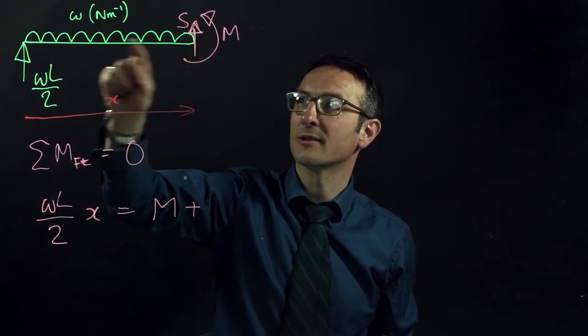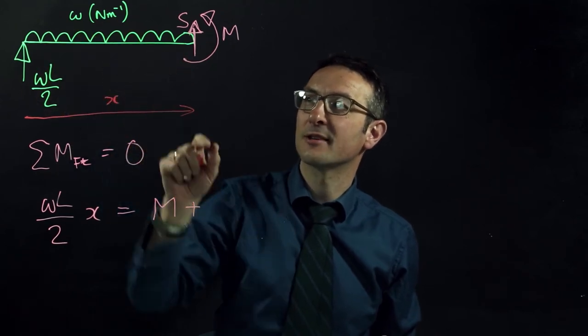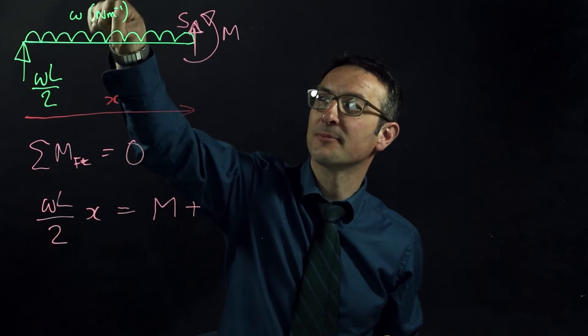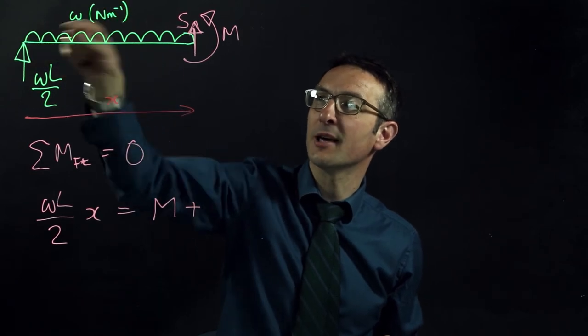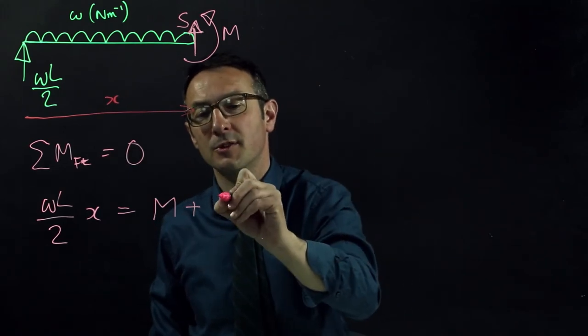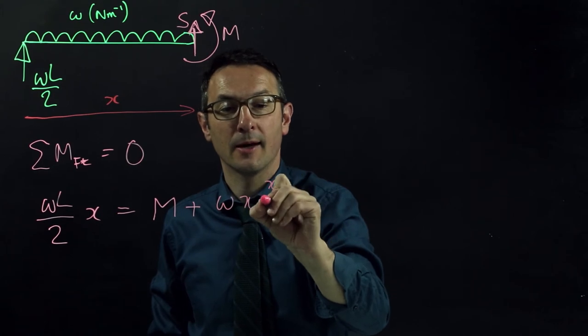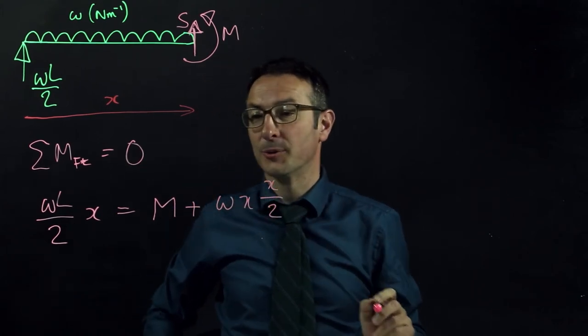and is acting through a point which is halfway between here and here, so the lever arm is x over 2. So we've got Wx times by x over 2.